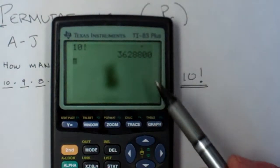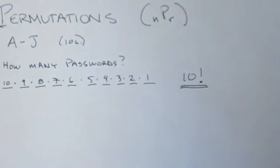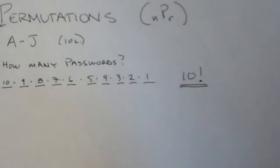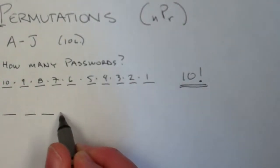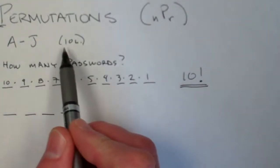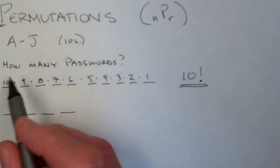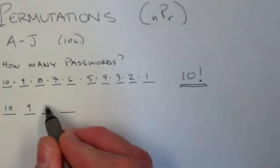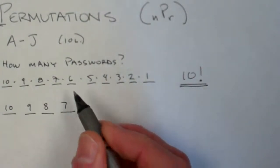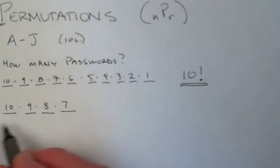Factorials get big quickly. But suppose it was a four-letter PIN number or PIN password. Now I've only got four blanks. And again, I can choose from the ten letters, but I chop it off. I've got ten, and then nine, and then eight, and then seven options for my last of my four letters.